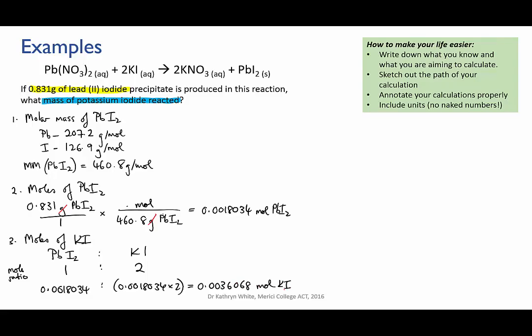Notice also that I'm maintaining plenty of sig figs as I work through the calculation. If you round off during a calculation you can introduce rounding errors that distort your final value. If you don't want to write down all the digits on the calculator just make sure you write down more sig figs than you'll need in your final answer. You can see because we started with 0.831 grams our final answer is going to be rounded to three sig figs so I'm keeping at least five in my calculations until the final answer.